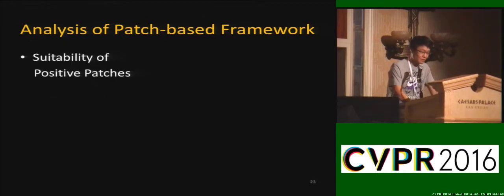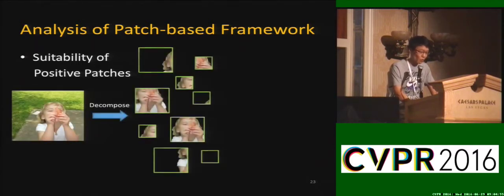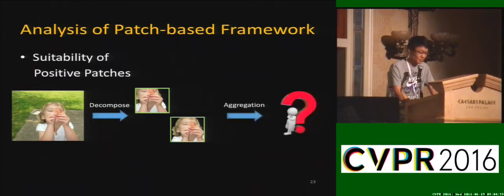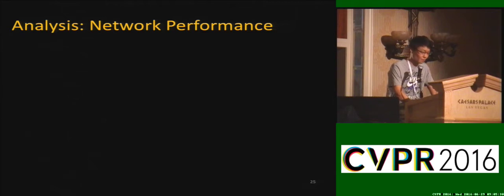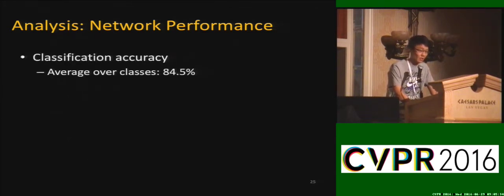We perform an analysis of our patch-based method. First, regarding the suitability of selected positive patches, we crop patches based on ground truth, select positive patches, and compose them to form final object instances. If objects can be correctly reconstructed, our selected patches are sufficient. In our experiments, the recall across all scales is higher than 90%, showing that our patch system and scale number are sufficient in theory. We also evaluate classification accuracy at 84.5% and mean IoU of 0.79 for segmenting masks, verifying that our patch-based system is reasonable.